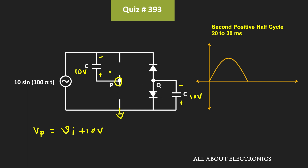Similarly, on the right-hand side, Vq is equal to minus 10V. Because of that, the upper diode will remain off — the voltage at its anode is minus 10V while the voltage at the cathode equals Vi, which varies from 0 to 10V during the positive half cycle, keeping the upper diode off. The lower diode also remains off since the voltage across it is minus 10V. That means once again, during the positive half cycle, all four diodes remain off, with Vp = Vi + 10V and Vq = minus 10V.